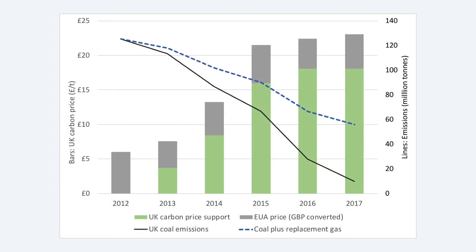This has in turn led to a very rapid fall in generation from coal, which has mainly been replaced by gas, in almost exactly the way I've already described. Emissions from coal generation have fallen by about 90% in the last five years, shown by the black line on the chart. The net fall in emissions is less than this — just over 50% if you take account of the emissions from running gas plants instead. This is shown by the dashed blue line on the chart.